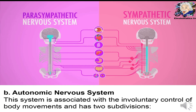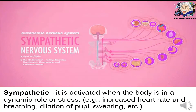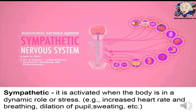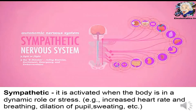Another subdivision of the peripheral nervous system is the autonomic nervous system, which is associated with the involuntary control of body movements. It has two subdivisions: the parasympathetic and the sympathetic nervous system. The sympathetic nervous system is activated when the body is under stress, leading to increased heart rate, breathing, dilation of the pupil, and sweating. It is also known as the E-division because it is activated during exercise, excitement, emergency, and embarrassment.